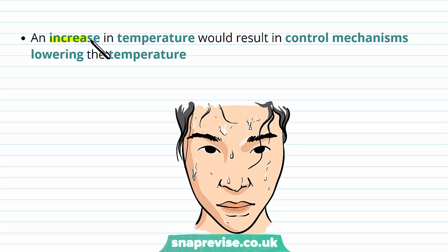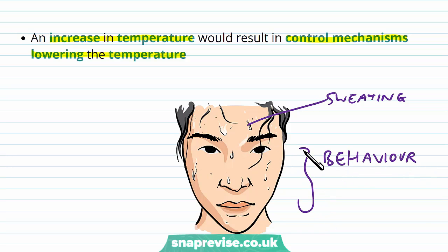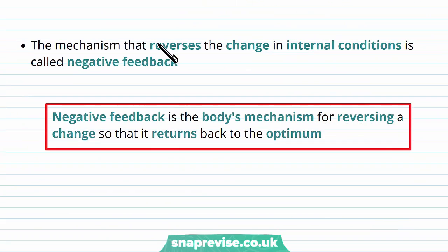If we increase the temperature — say if we started doing exercise or were in a desert — then the control mechanisms found in various parts of the body work to lower the temperature back down to the optimum. For example, by sweating, certain behavioural changes like what we wear as clothes, and other mechanisms detect that the temperature has gone up and bring it back down to the optimum level. The mechanism which reverses the change in the internal condition is called negative feedback — it's the body's mechanism for reversing a change so that it returns back to the optimum.